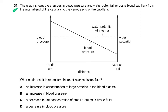Question 31: the graph shows changes in blood pressure and water potential across a blood capillary from the arterial end to the venous end. Blood pressure is decreasing from arterial to venous end, and then there's the water potential of the plasma. Which change could result in an accumulation of excess tissue fluid — meaning fluid is not returning back? The answer is an increase in blood pressure: more blood is coming out, so less is returning.